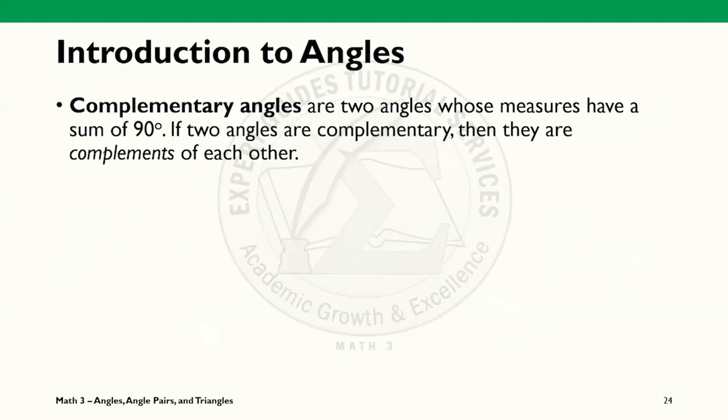Complementary angles are angles that when summed, they measure exactly 90 degrees. In this example, we can say that angles COR and RON are complements because their sum is equal to 90 degrees. The square in the corner on the vertex is the notation for the 90 degree angle.